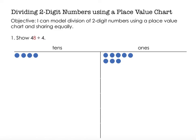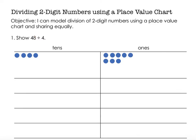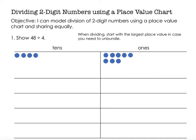So I have 48 and I want to divide it by 4. That means in my chart, I want to split my chart into four equal parts that I can share into — 1, 2, 3, 4 equal-size parts. With division, we are going to start with the largest place value, because sometimes we need to unbundle the larger place value and exchange it for 10 of the smaller place value. So we start with our tens place and share our tens equally. I have four tens, I can put one in each group, and I've shared all of my tens.